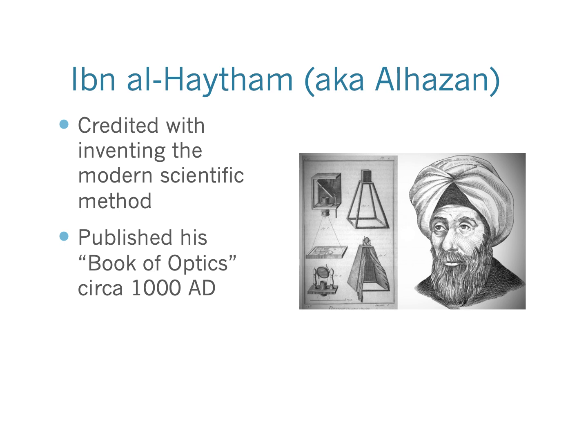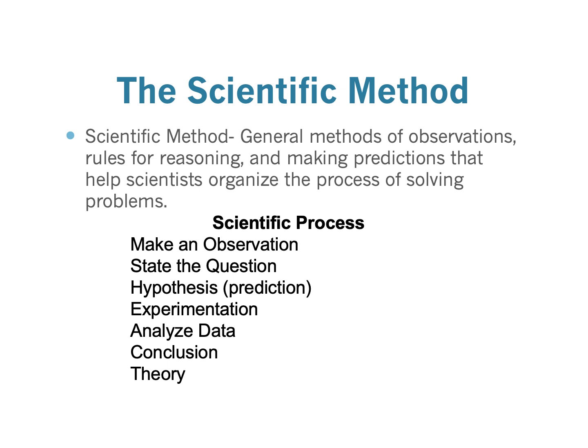You probably already knew the definition of science — you learned it back in third grade. A science is a process that follows the steps and procedures of the scientific method. Al-Hazan is really important because he's the guy who actually developed the method by which science is done. The scientific method is a method of observation, reasoning, and making predictions — really it's about organizing the process of solving problems.